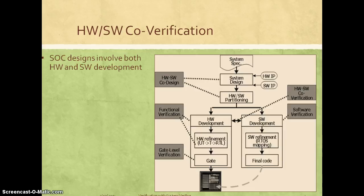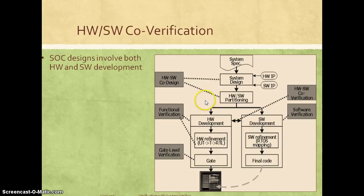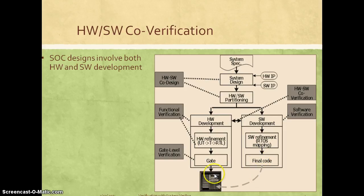Now let's see what is hardware-software co-verification. As mentioned, SOC or system-on-chip designs involve both a hardware development phase and a software development phase. At a high level, we come up with a system specification based on what the system has to do. During the system design phase, we partition those specifications into what has to be implemented in hardware versus software. On the hardware side, we refine the hardware specs, implement the actual design using RTL, and then synthesize to gates. On the software side, we refine the software spec, define what goes into the OS level, the different layers of driver software, and then develop the software code.